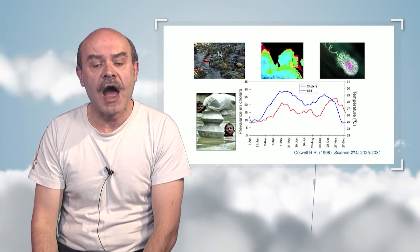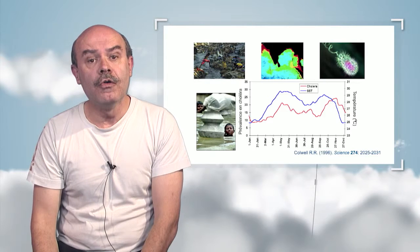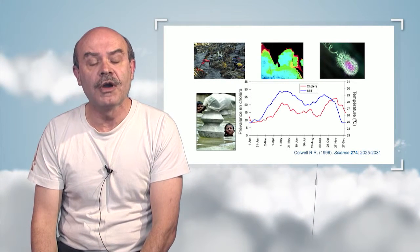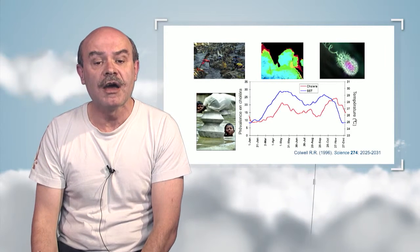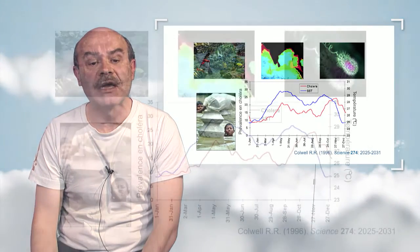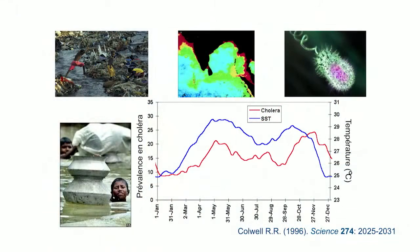Let us take one example. Cholera, a disease due to an aquatic bacterium, Vibrio cholerae, which lives in coastal areas — for instance, in Bangladesh or in the Gulf of Bengal. If we analyze the number of cholera epidemic cases over one year, we find that the rising number of cases shown in red are highly correlated with the surface water temperature shown in the blue curve.